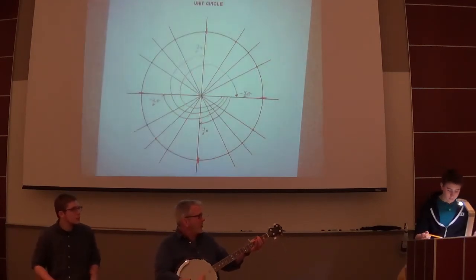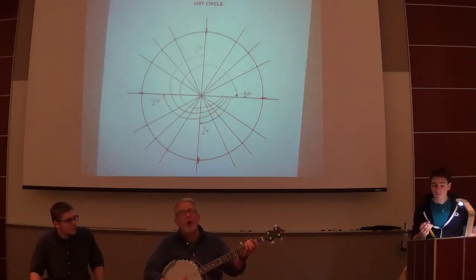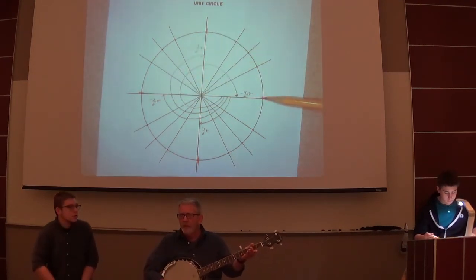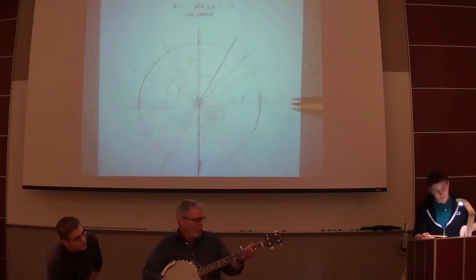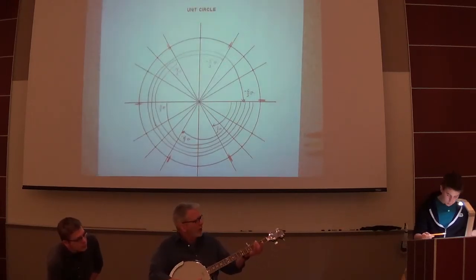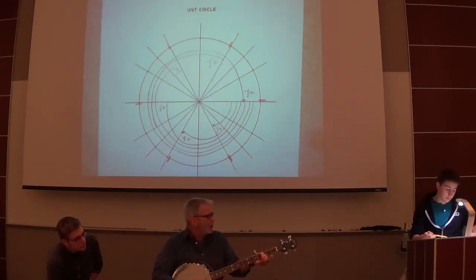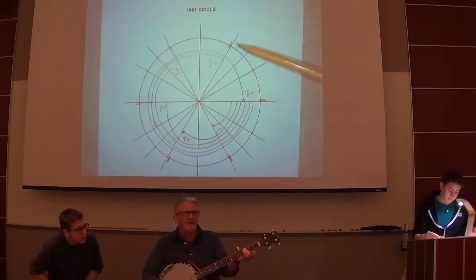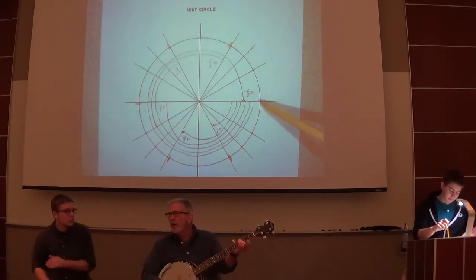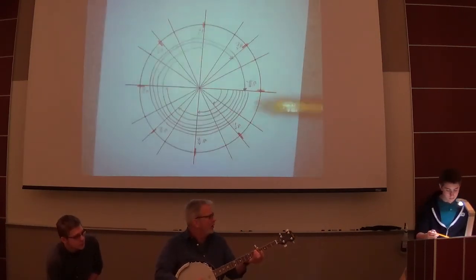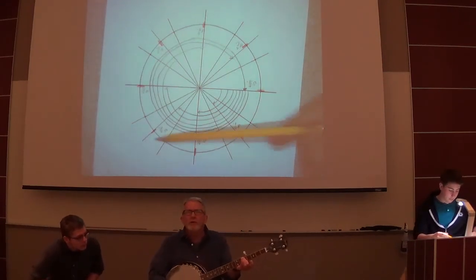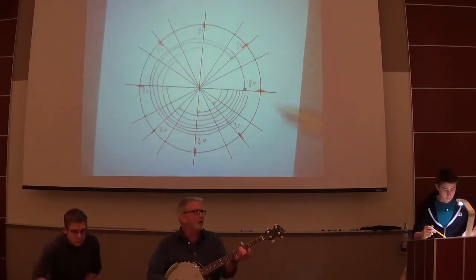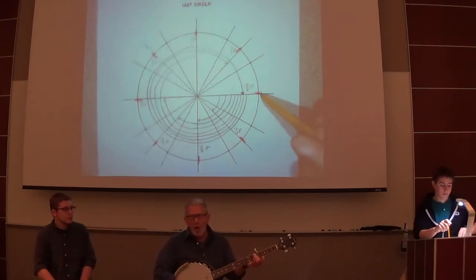Can we go negatives? Let's go negative there, Bailey. Here we go. Negative 1 half, 2 half, 3 half, 4 half pi — all negatives. How about negative 1 third of pi? Negative 1 third, 3 third, 4/3, 5/3, 6/3 pi. Negative 1/4, 2/4, 3/4, 4/4, 5/4, 6/4, 7/4, 8/4 pi — all negatives.